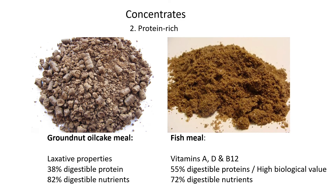For protein-rich concentrate examples, the first is groundnut oil cake meal and the second is fish meal. Groundnut oil cake meal has laxative properties and can cause diarrhea if the animal eats too much protein — the body tries to excrete the excess. These are given in small amounts. It has 38% digestible protein, which is considered high for protein content, and a good level of digestible nutrients overall.